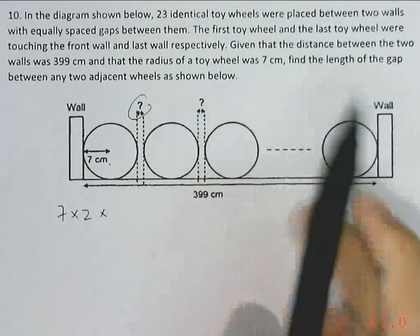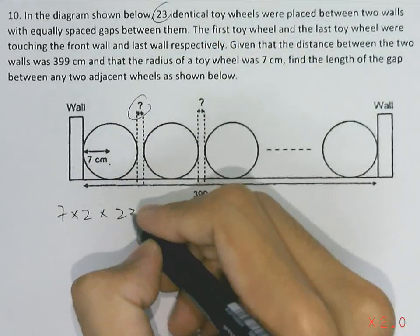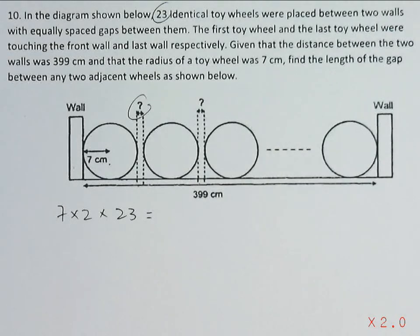The figure 322. So this is the whole length covered by all the diameters of the toy wheels.